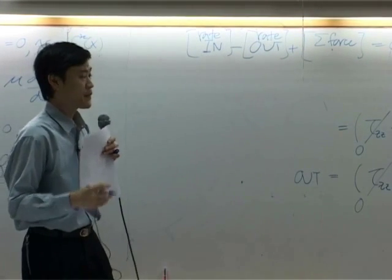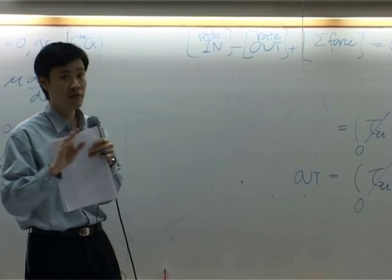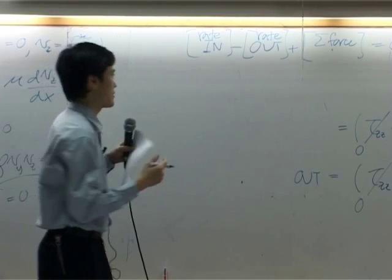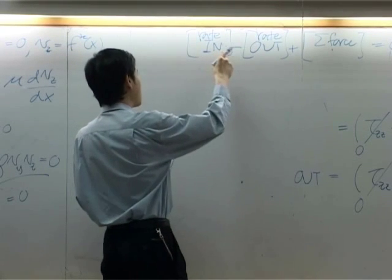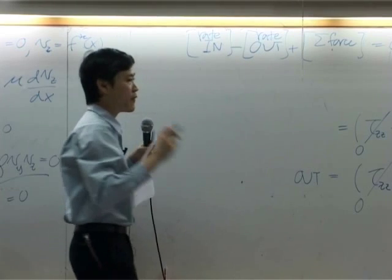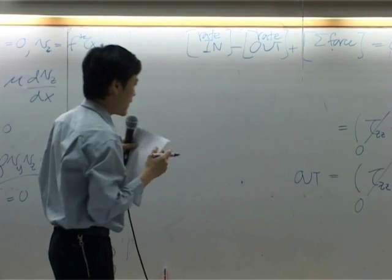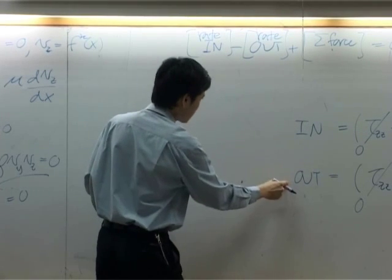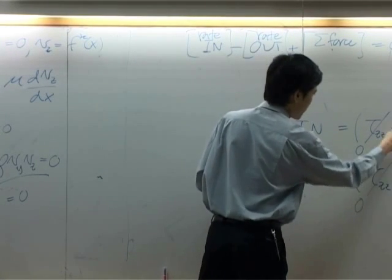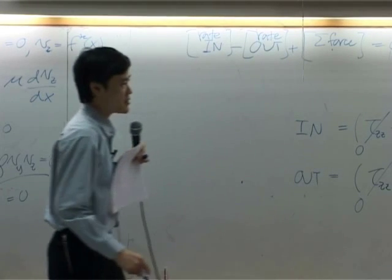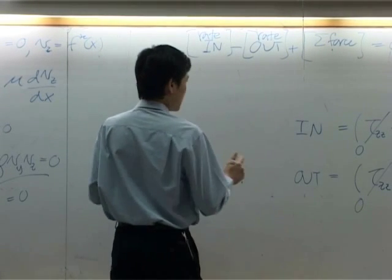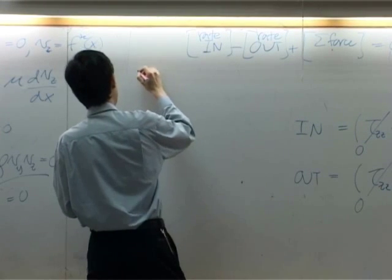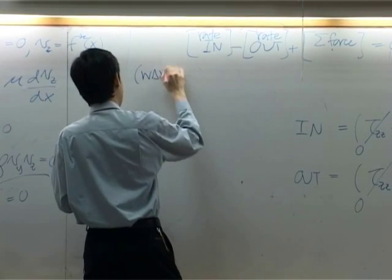Now, once we already determine all terms, we will put them into the balance. First I'm going to combine in minus out for each direction. In this first direction, in minus out should equal to these two terms subtracted by each other.